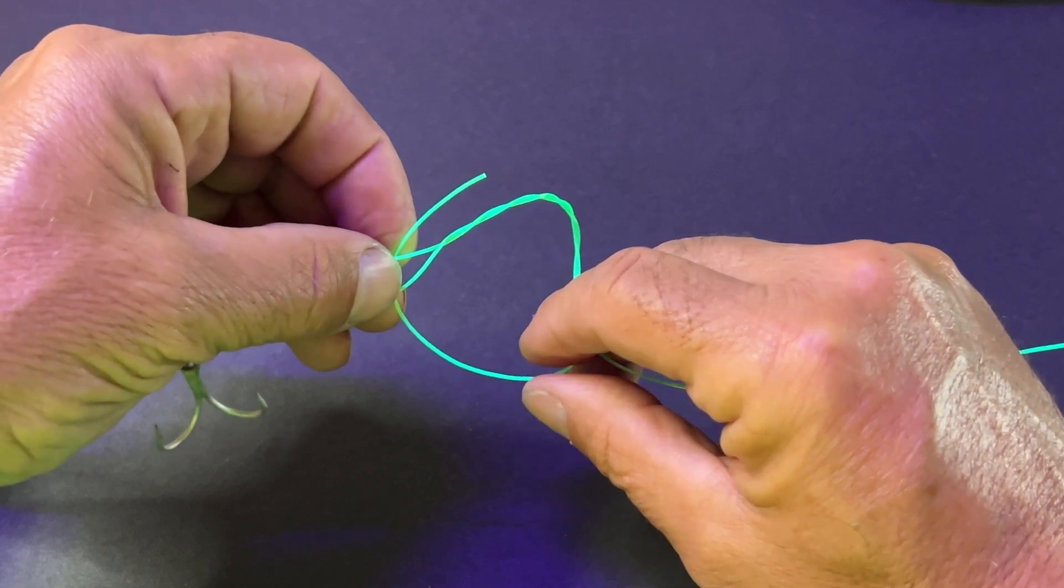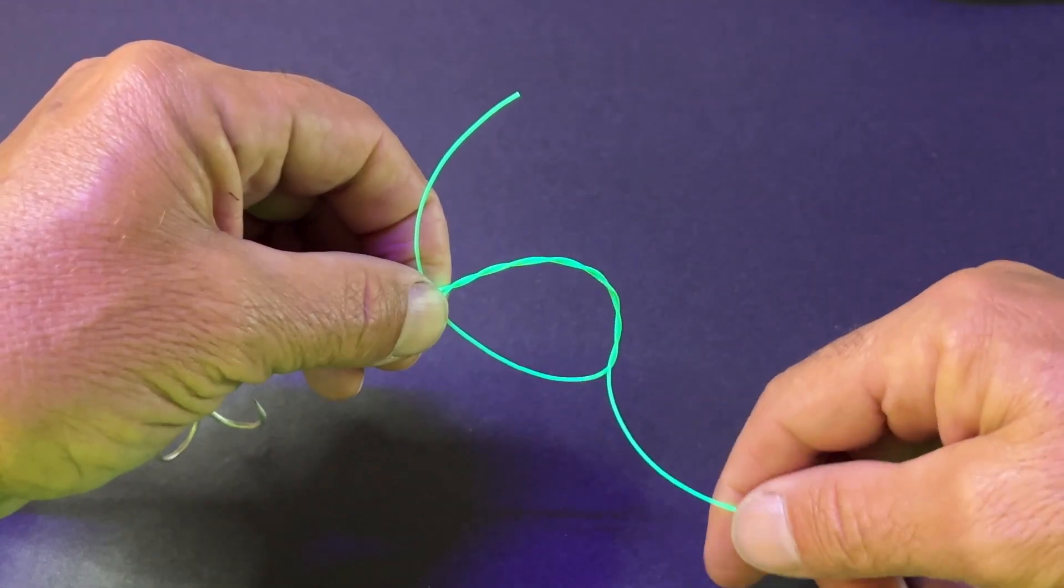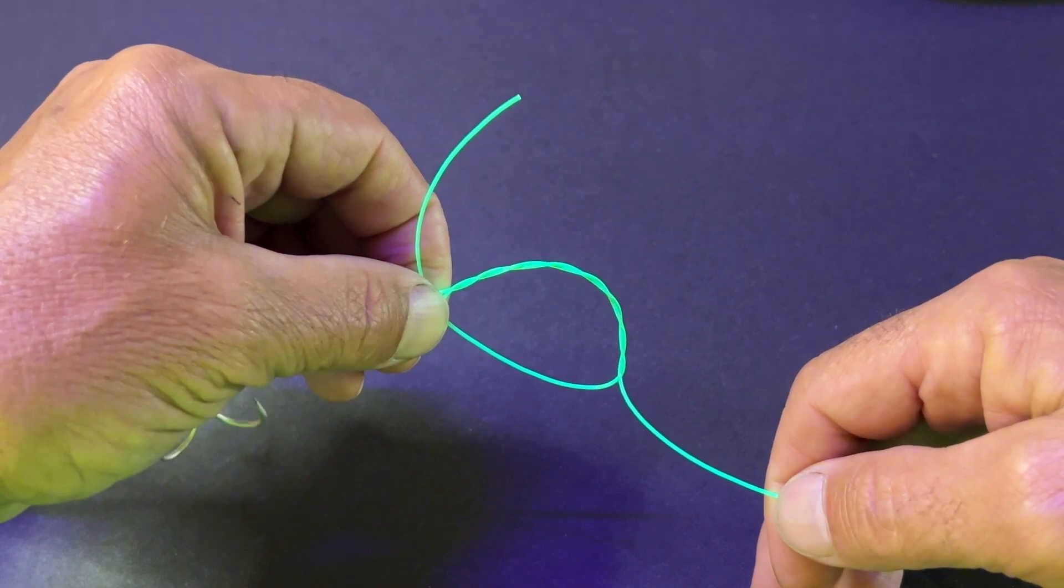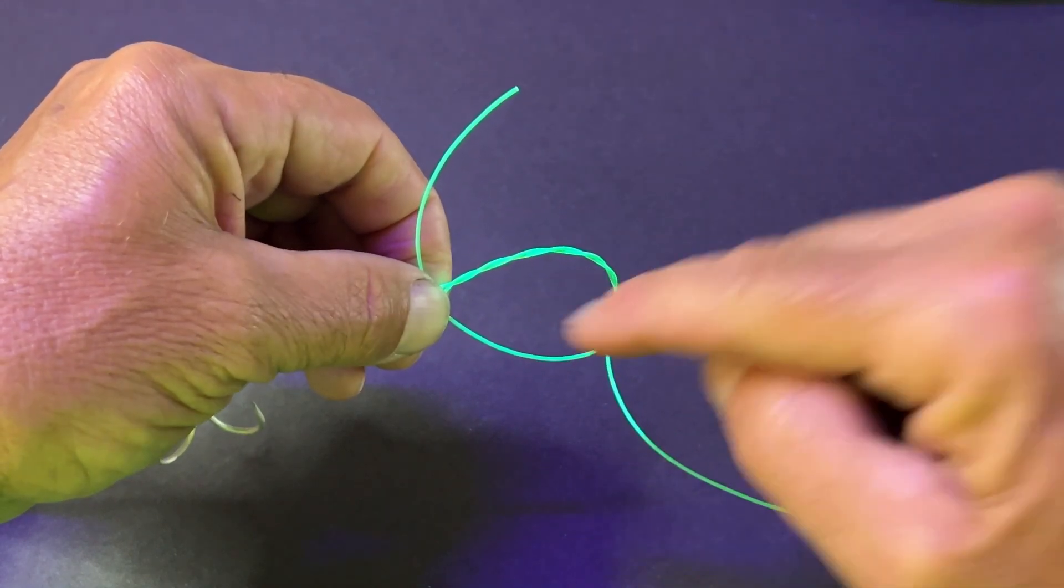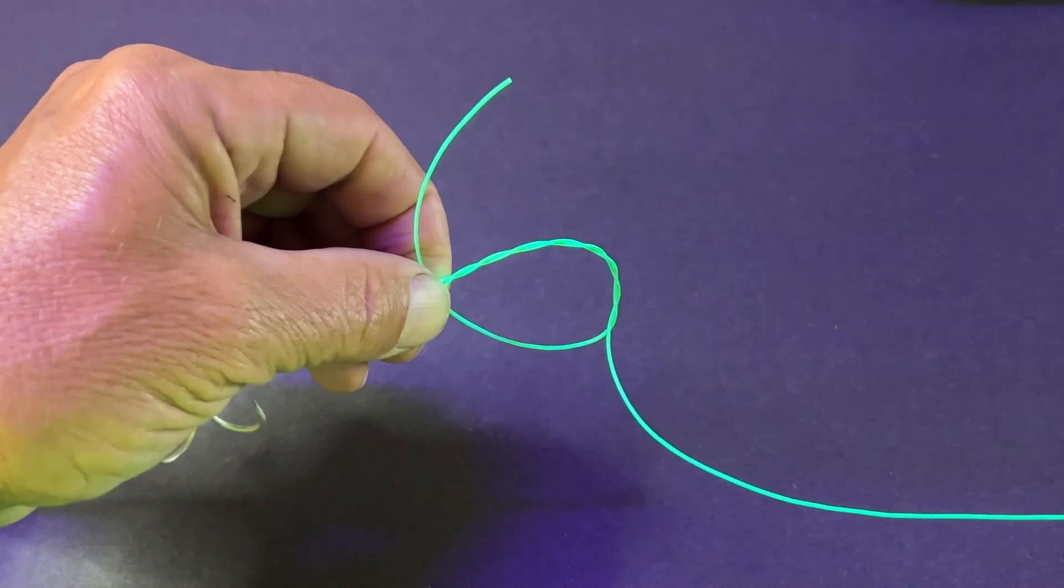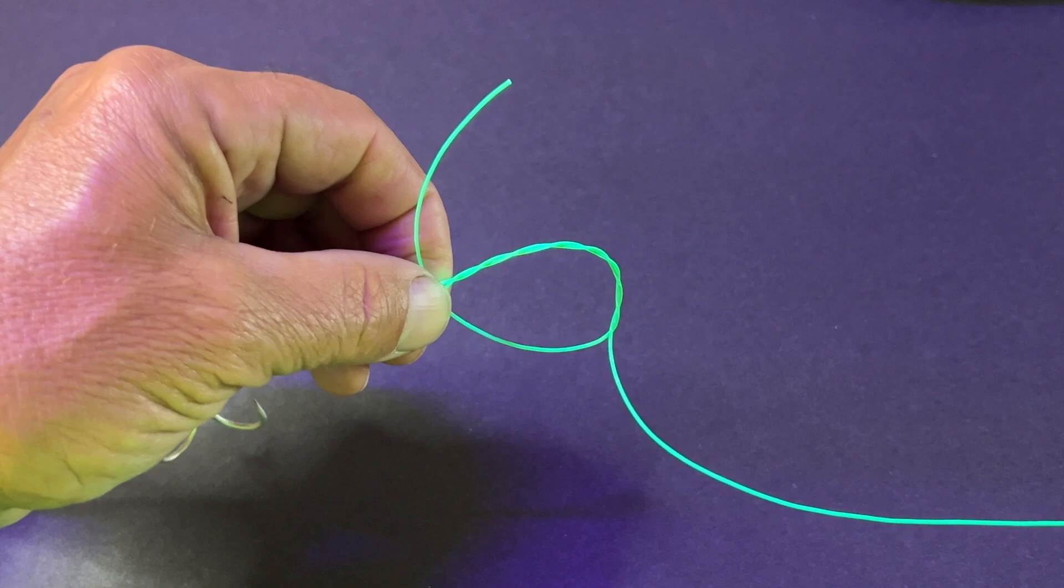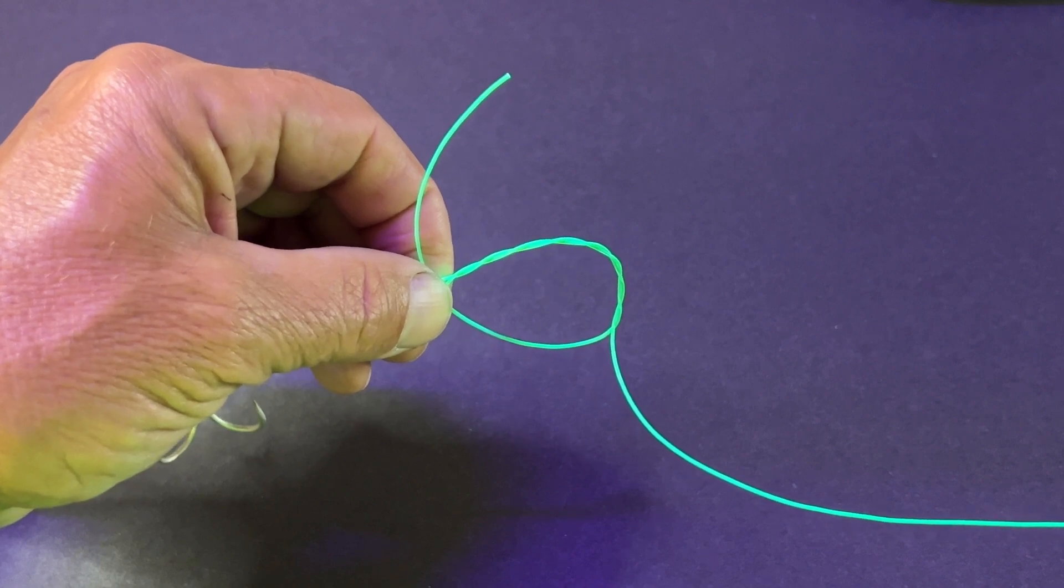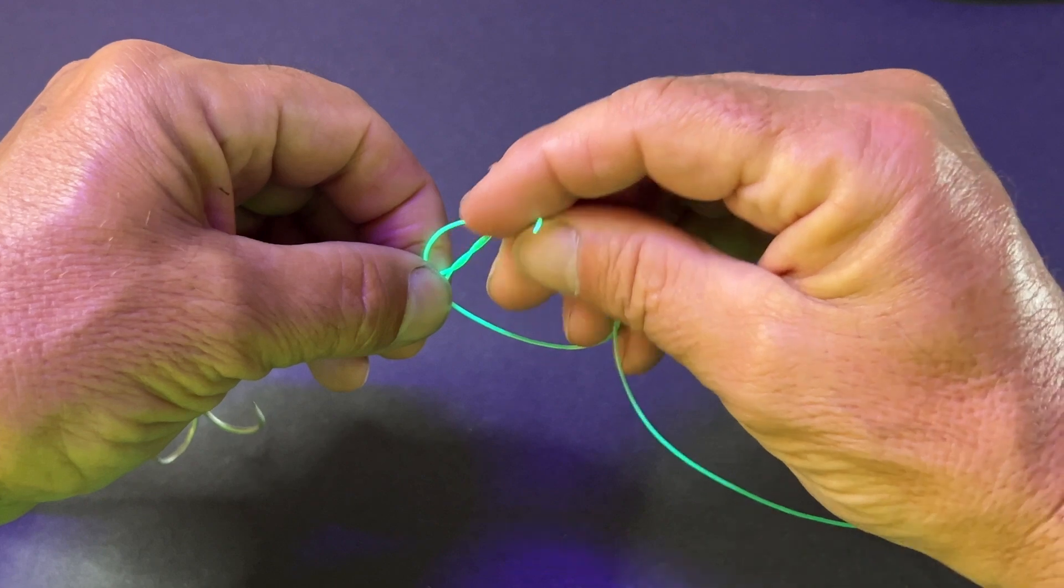Now, if I pulled this tagline here at this point, I would have a regular clinch knot. If I bring this tagline back through this loop, I'm going to make an improved clinch knot, which is several times stronger than the clinch knot. So now I'm going to bring the tagline back through that loop we just created.